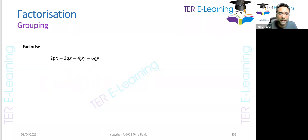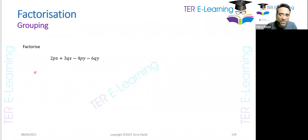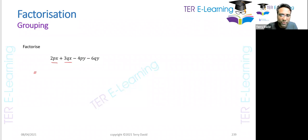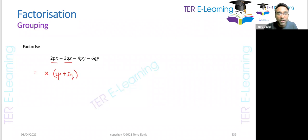Let's do the next one. First, identify if we're using this method — yes, there are four terms. Look at the first two terms: 2px and 3qx. The only thing common between those two is x, so we get x(2p + 3q). Don't write the sign yet.